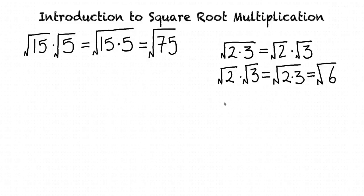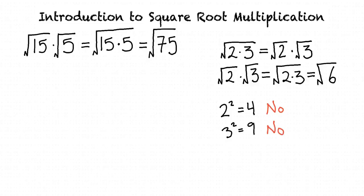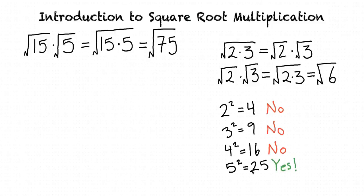Let's write out a few square numbers. 2 squared equals 4, so 4 is a square number, but 75 cannot be divided by 4 evenly. 3 squared equals 9, so 9 is a square number, but it also does not evenly divide 75. 4 squared equals 16, but 16 is not a factor of 75. 5 squared equals 25, and 25 is a factor of 75 because 25 times 3 is 75. So we can rewrite this square root as the square root of 25 times 3.